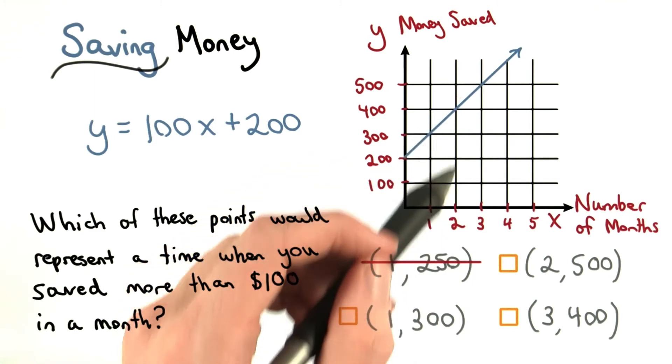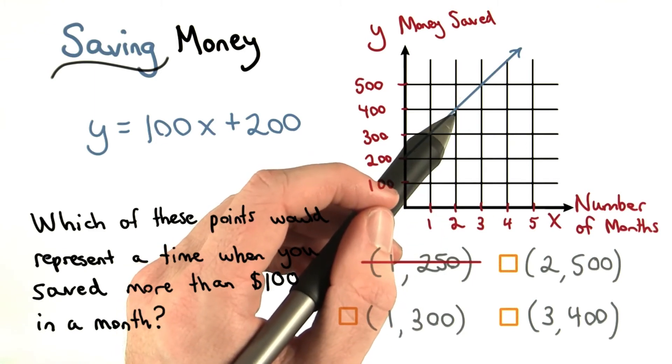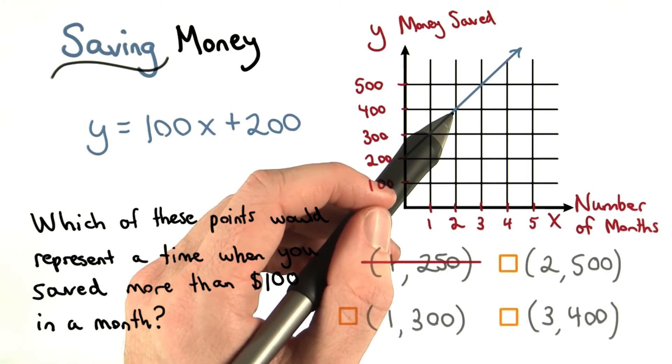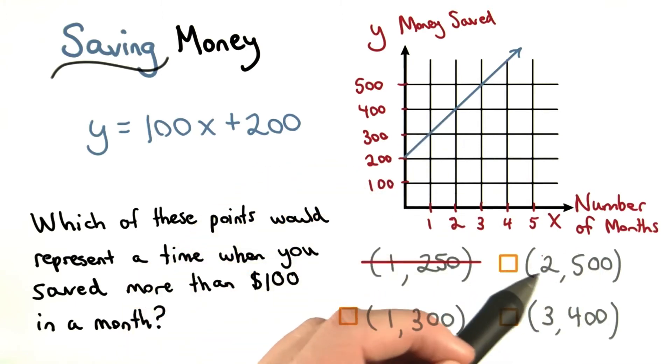I know this because after two months, I should expect to have exactly $400 if I were to save exactly $100 a month. But we have more, so this one works.